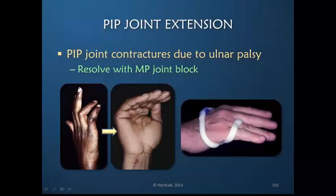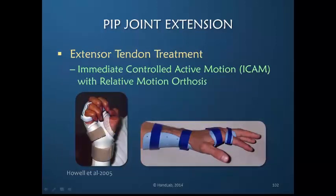We can observe that flexion contractures secondary to ulnar palsy can be resolved by the use of an orthosis that blocks metacarpophalangeal joint hyperextension. And if that works in individuals with ulnar palsy, there is no reason the same orthosis cannot be used to gain PIP extension for all the digits. Recently, we have come to appreciate that a superb way to manage many extensor tendon injuries is the use of what is called an immediate controlled active motion orthosis - also called a relative motion orthosis, a yoke splint, or a MERIT orthosis.